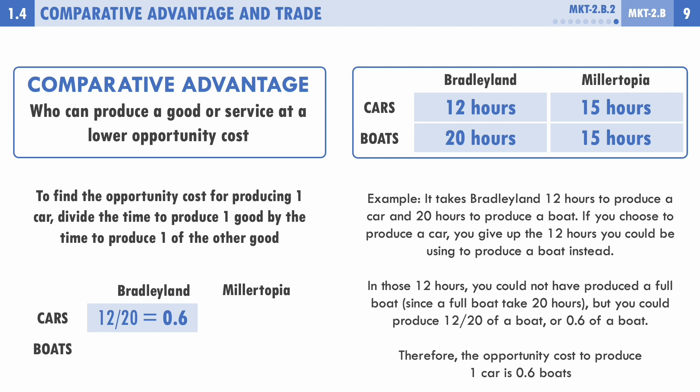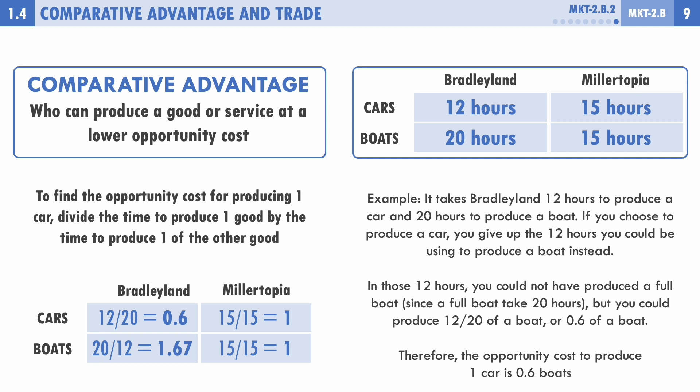For Bradley Land's boat opportunity cost: 20 hours toward a boat means giving up 20/12 cars, or 1.67 cars — one and two-thirds cars. For Millertopia, 15 divided by 15 gives one, so one car costs one boat and vice versa. These numbers match what we calculated before. The key warning: if a table shows hours, remember it's the time to produce one unit — don't compare raw numbers directly.